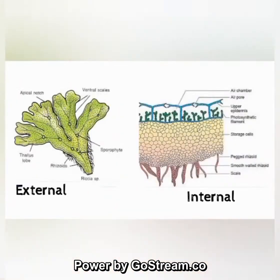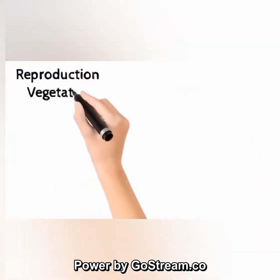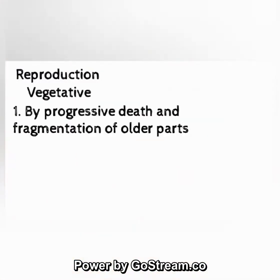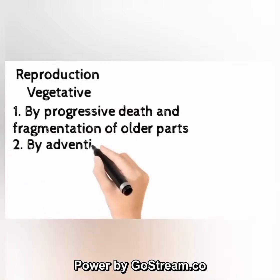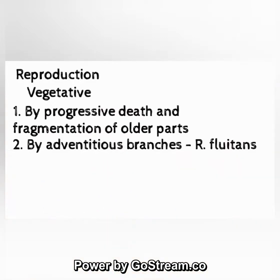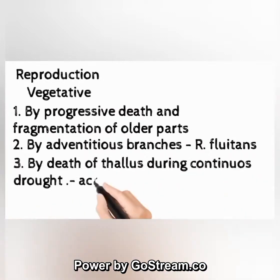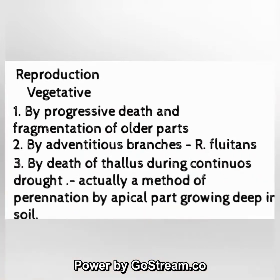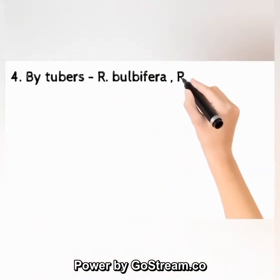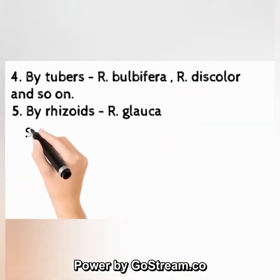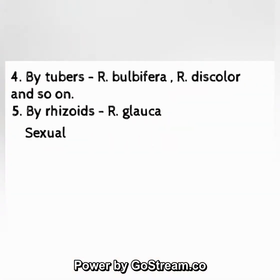Reproduction — vegetative: (1) by progressive death and fragmentation of older parts; (2) by adventitious branches in R. fluitans; (3) by death of thallus during continuous drought — a method of perennation by the apical part growing deep in soil; (4) by tubers in R. bulbifera and R. discolor.